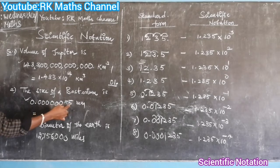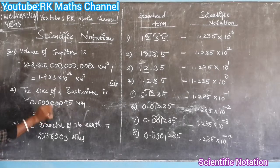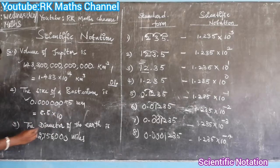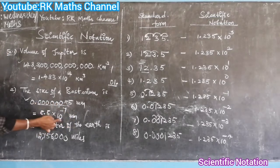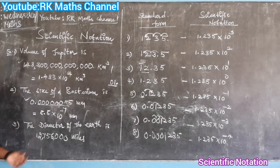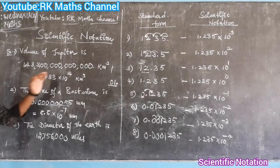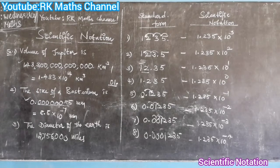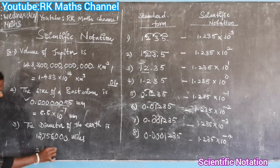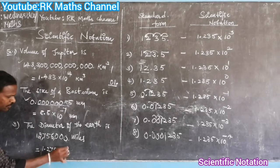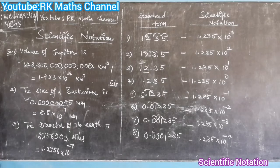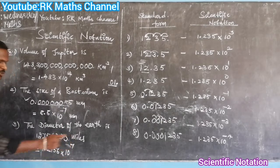You want to find it — 7 digits. 8.5 into 10 to the power of minus 7. What is the volume of Jupiter? 1.43 times 10 to the power of 14. 1.2756 — 1,2,3,4,5,6,7 — 10 to the power of 7. Yes sir.